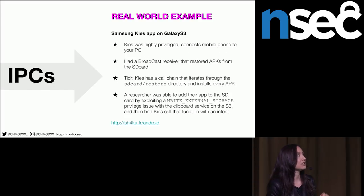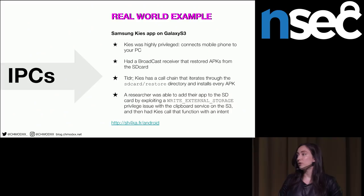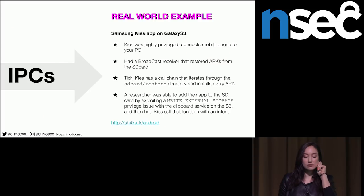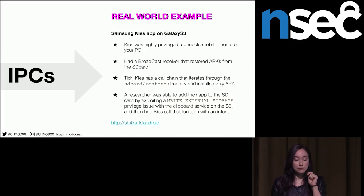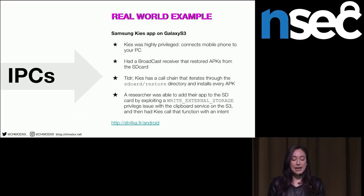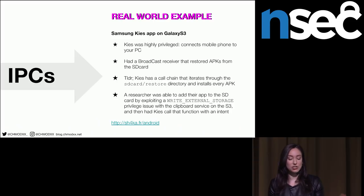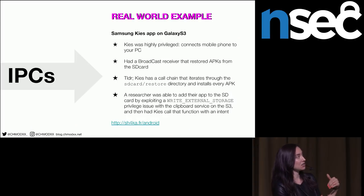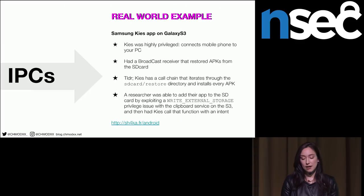Here's a fun real-world example. The Samsung Keys app on the Galaxy S3 was super privileged — it connected your phone to your PC and had a broadcast receiver that restored APKs from an SD card. A researcher was able to exploit a vulnerability in the clipboard service on the S3 along with a write external storage privilege issue. They copied a malicious application to the SD card, and a call chain in the Keys application would install that APK with the same provisions that Keys had. That's terrifying.